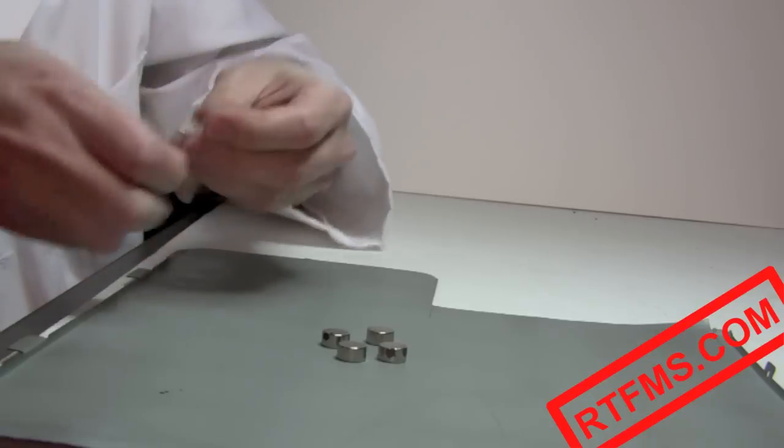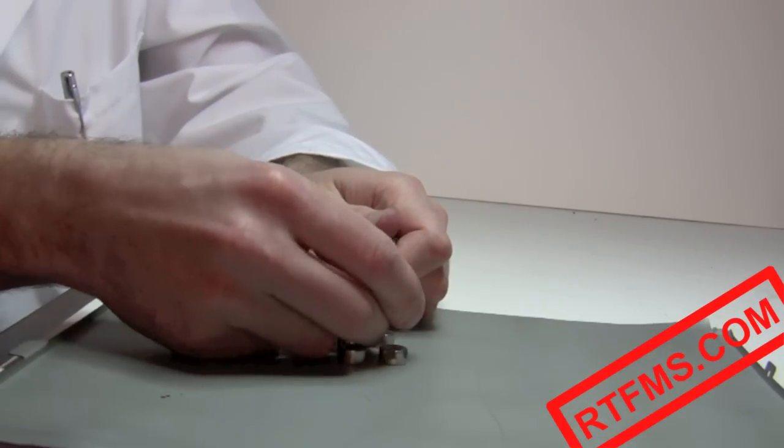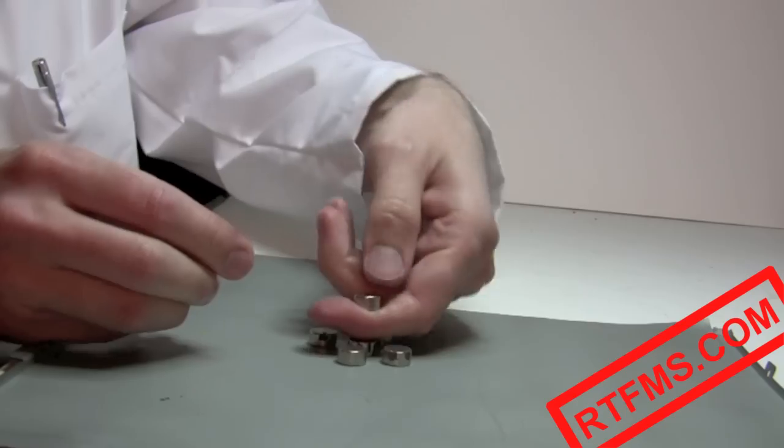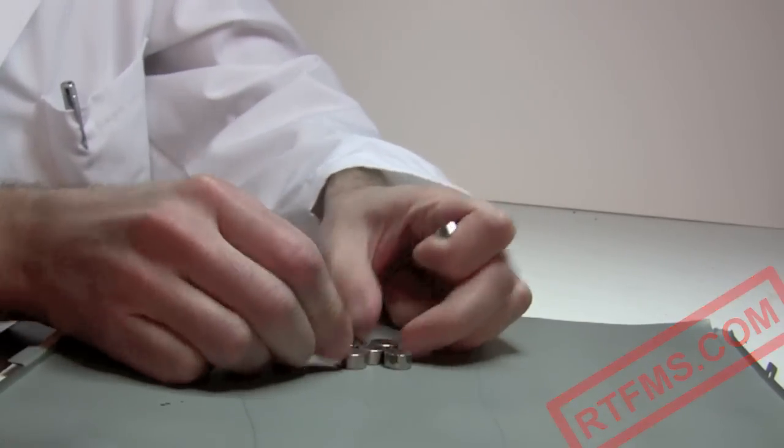In fact, back in 1842, British mathematician Samuel Earnshaw proved that it is impossible to suspend a regular magnet in space with the sole help of other regular magnets statically placed around it. So, it is impossible to suspend a magnet in space using just a bunch of other magnets.